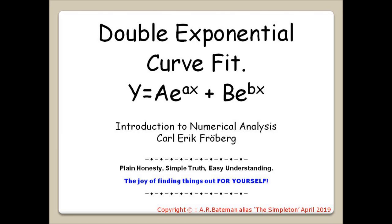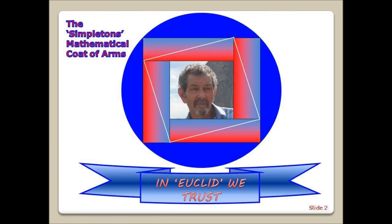Double Exponential Curve Fit: Y equals AE to the AX plus BE to the BX, from the book Introduction to Numerical Analysis by Carl Eric Froberg. My motto: Plain Honesty, Simple Truth, Easy Understanding, The Joy of Finding Things Out for Yourself. The Simpleton's Mathematical Coat of Arms: In Euclid we trust.